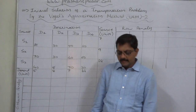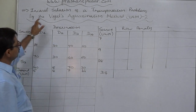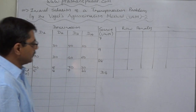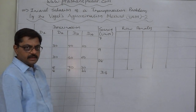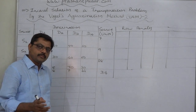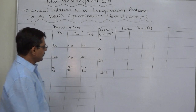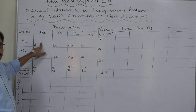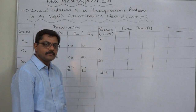Welcome. Let us take one more case of finding the initial solution of a transportation problem by Vogel's Approximation Method (VAM). In VAM, first we have to select a row or column with the highest penalty, then from the selected row or column we select the cell with the lowest cost and make an allocation. The penalty is the difference between the lowest cost and the immediate higher cost of the row or column.